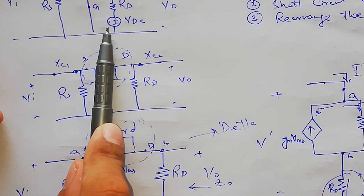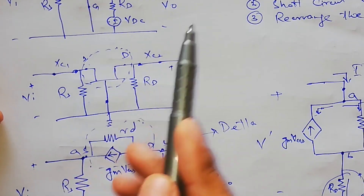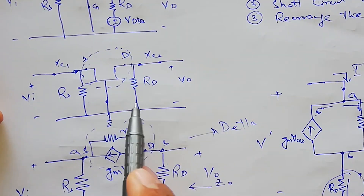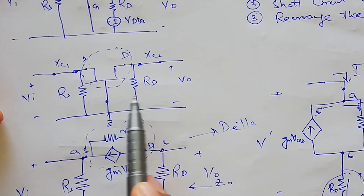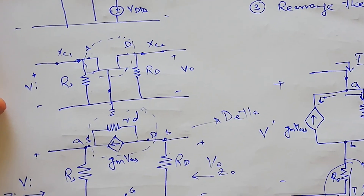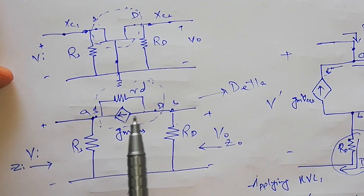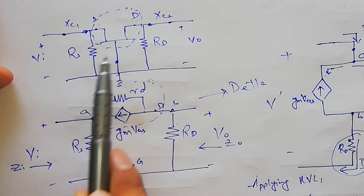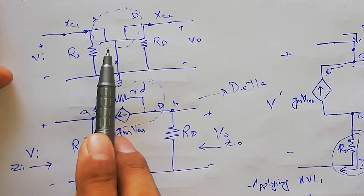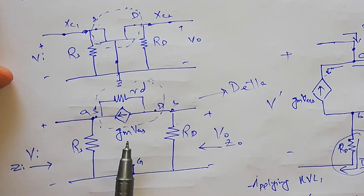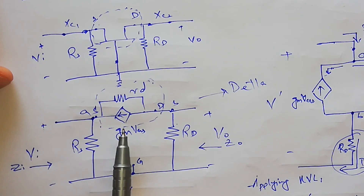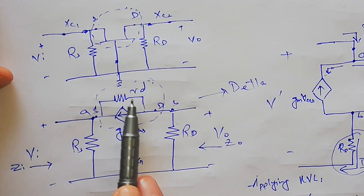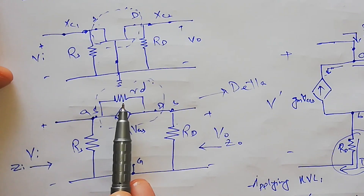Also, the voltage source VDD has been replaced here — the voltage source has been replaced with a short circuit. Now we are going to replace the FET device with its equivalent circuit. There is a current source of value gm times VGS and there is a resistance rD in parallel.